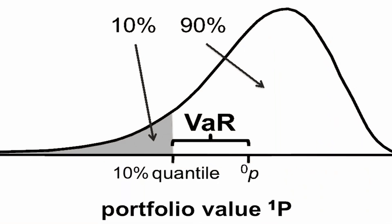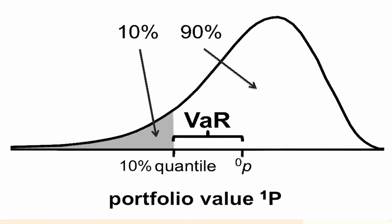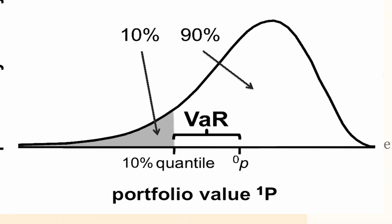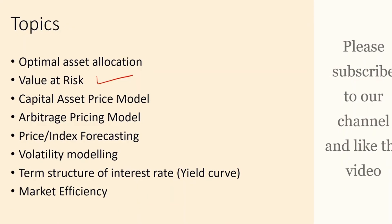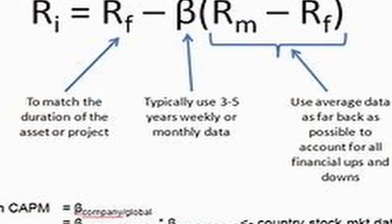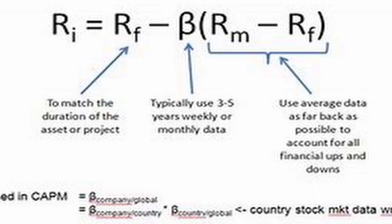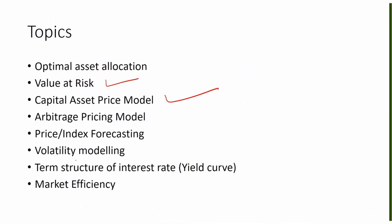Value at risk is very famous in risk management and market risk, where you identify risk based on movement in the market prices of different assets. Capital Asset Pricing Model - those who have studied corporate finance would know it's a very famous model to price different assets. Arbitrage Pricing Model - arbitrage is basically where you take advantage of the differences in two markets.